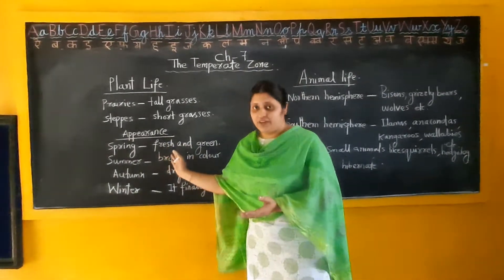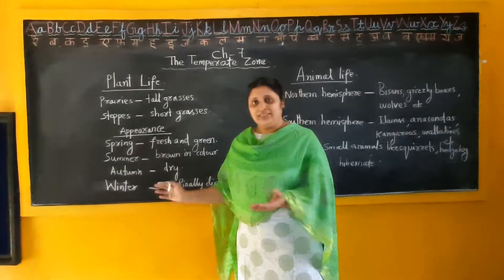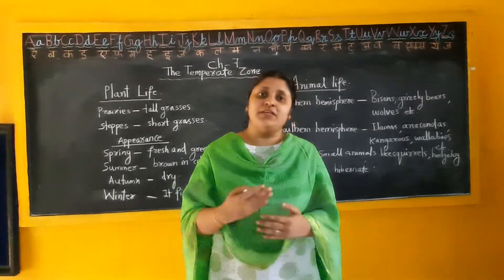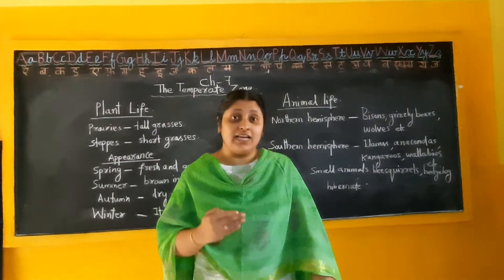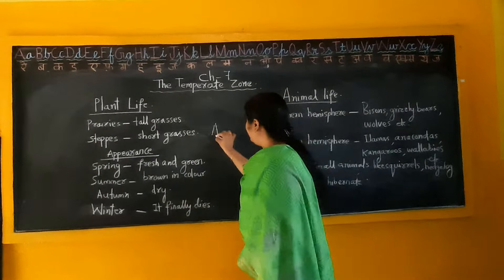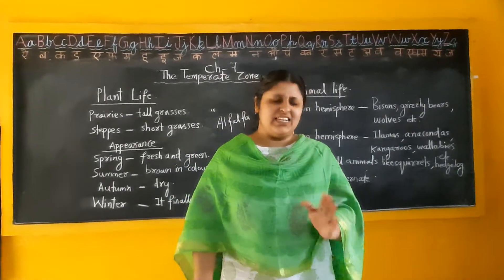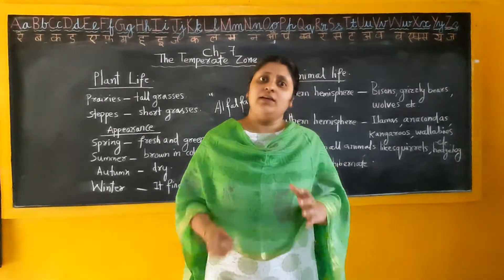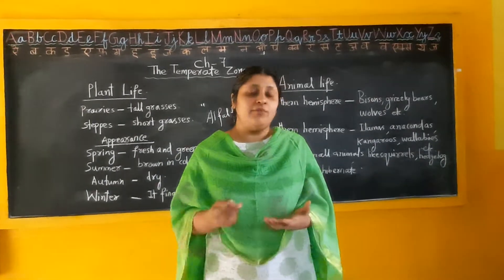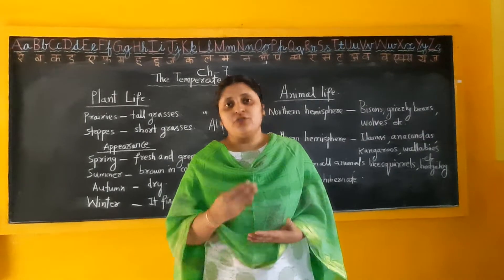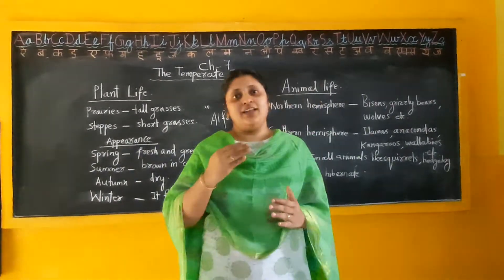One of the most common grasses we can see in the temperate grasslands is called alfalfa. It is mainly fed to cattle, and one special thing about this grass is that it grows very quickly. So alfalfa is the most common grass found in the temperate grasslands. That is all about the plant life in the north and south temperate grasslands.